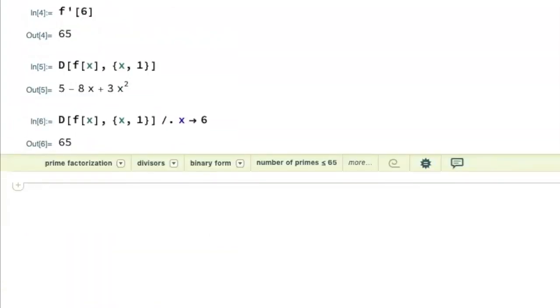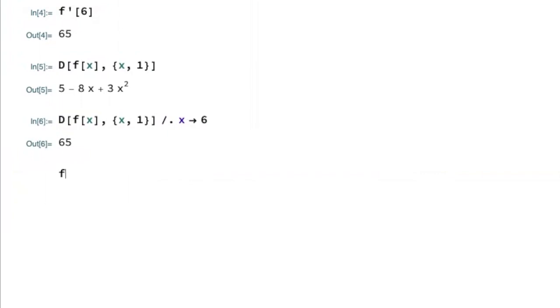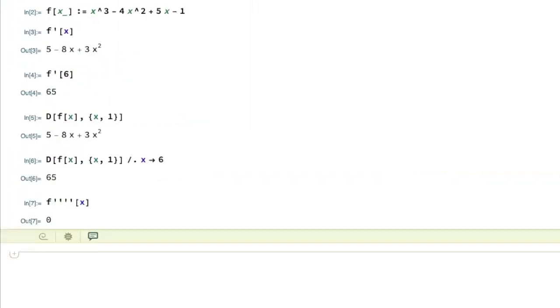Now, how would I go about finding the fourth derivative? Well, you can go crazy with the primes. And notice we get zero, because since our highest power is to the third power, by the time we get to the fourth derivative, we're taking the derivative of a constant and getting zero.